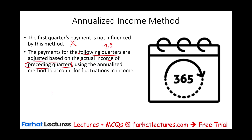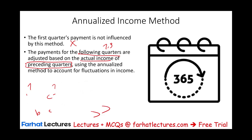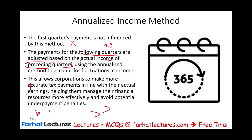For the third quarter, we're going to look at income up to the second quarter, annualize it, and pay our taxes. This allows the corporation to make more accurate tax payments in line with their actual earnings rather than guessing, helping them manage their financial resources more effectively and avoid the most important thing — underpayment penalties. Because if you're following this method, you would avoid underpayment penalties.